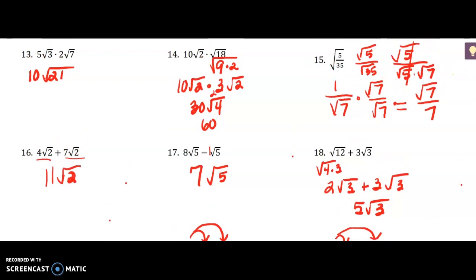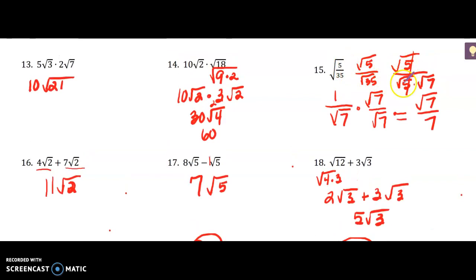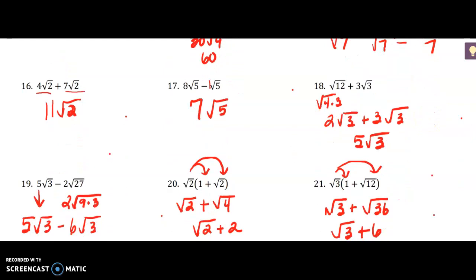For number 15, we are eventually going to have to rationalize the denominator, but before doing so, notice I chose to simplify the denominator into the square root of 5 times the square root of 7. Then these cancel because the square root of 5 over the square root of 5 is 1, so I have 1 over the square root of 7. I still have to rationalize my denominator, so my final answer is the square root of 7 over 7.